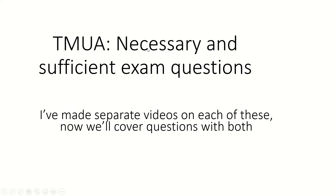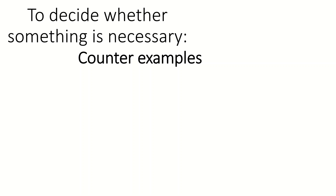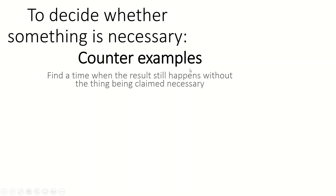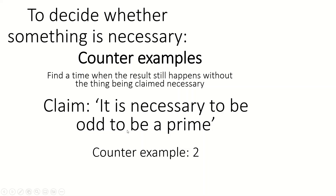To decide whether something is necessary, it's counterexamples. To decide whether something is necessary, you're looking for a time where the result still happens without the thing claimed to be necessary. For example: it is necessary to be odd to be a prime. Can we find a time where it's possible to be prime without this? Yes — two is prime and it's not odd. So it is not necessary to be odd to be prime, although almost every prime is odd.